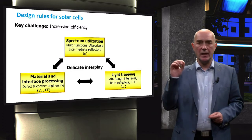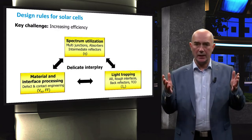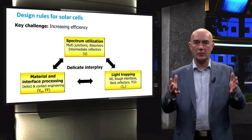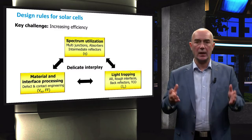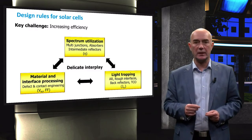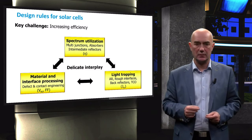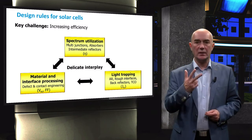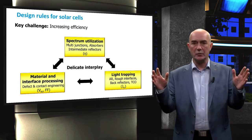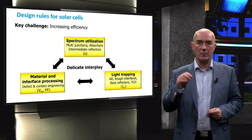Light management aims to reduce the optical losses in solar cells. In this area, the focus is on optimal design of rough interfaces for efficient scattering and diffraction of light, low-absorbing and high-conductive transparent electrodes, and design of anti-reflection structures and coatings. These three design rules affect each other, and thus the overall improvement of the solar cell efficiency is a delicate interplay among them.